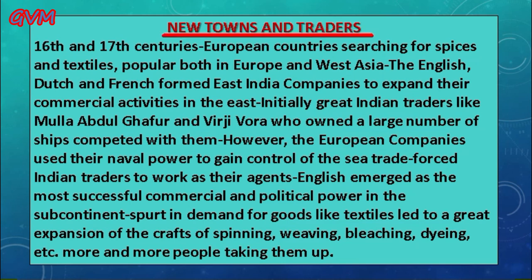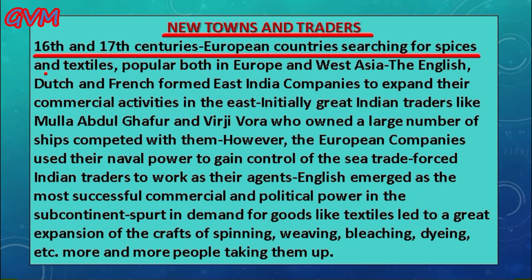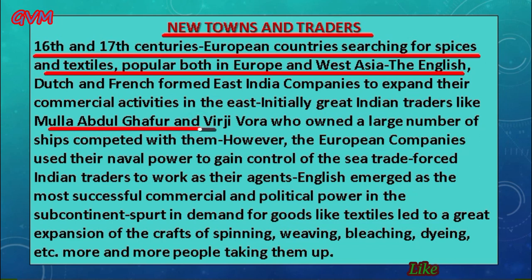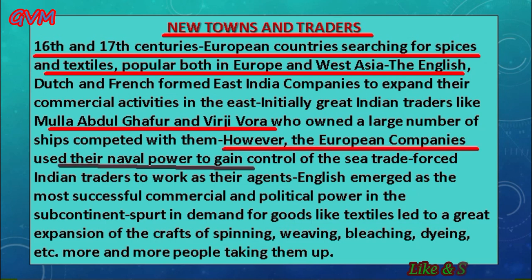In the 16th and 17th centuries, the English, the Dutch, and the French formed East India Companies to expand their commercial activities in the east, seeking spices and textiles. Initially they faced resistance from local traders, but the companies soon gained control over the sea routes and forced local traders to be their agents. Local traders such as Mullah Abdul Gafoor and Virji Vora gave tough resistance to these East India Companies, but despite this the Indian traders lost control over trade because the European companies used their naval power to gain control of sea trade.